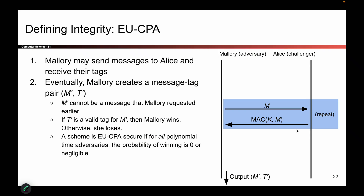She can do this a polynomial number of times — this is Mallory doing the chosen plaintext attack. It's kind of like how Mallory got to trick Alice into encrypting messages, but now she is tricking Alice into creating MACs on messages. Mallory doesn't know the key, but she can trick Alice into using the key to generate MACs on any message she likes.